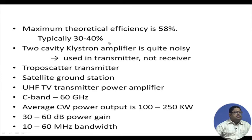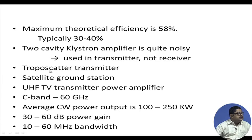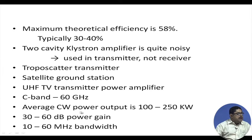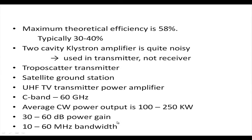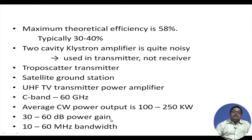Maximum theoretical efficiency is 58 percent, and typically 30 to 40 percent efficiency is achieved from this amplifier. The two-cavity klystron amplifier is quite noisy and is used in transmitters. It cannot be used in sensitive receivers because they require low noise devices. It is used in troposcatter transmitters for atmospheric studies, satellite ground stations, and UHF TV transmitter power amplifiers from C-band (4–6 GHz) to 60 GHz. Average CW power output is 100 to 250 kilowatts, with 30 to 60 dB power gain and 10 to 60 MHz bandwidth.